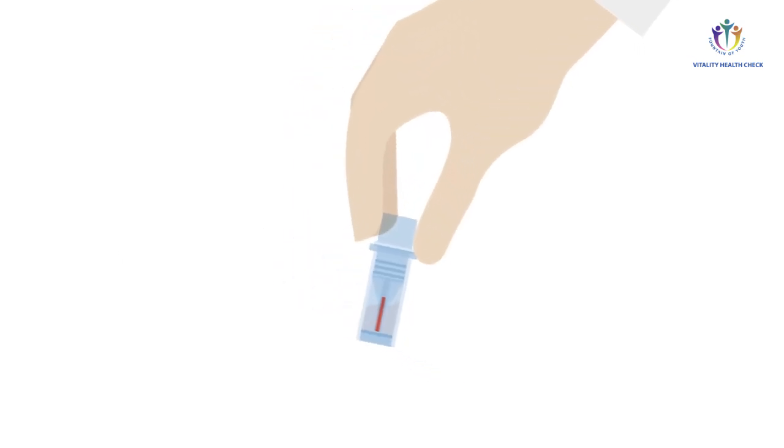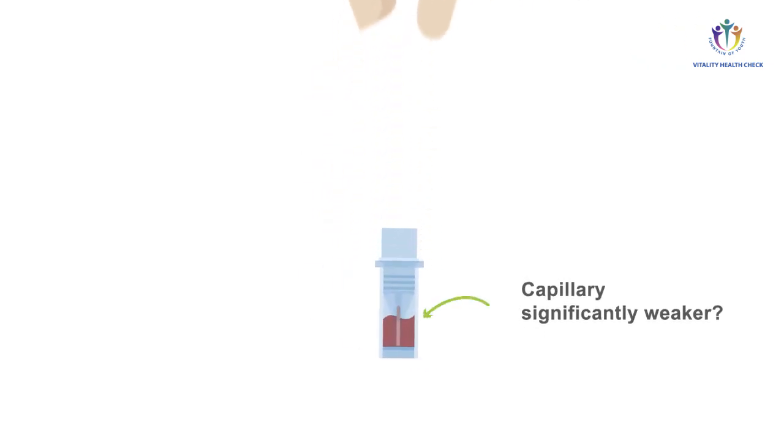Always check your result in transmitted light. The centrifugal force must pull the sample out of the capillary and into the sample buffer before it absorbs liquid again. Complete mixing is achieved once the liquid in the capillary appears to be stained weaker than the pre-mix at the bottom of the collection tube in translucent light.